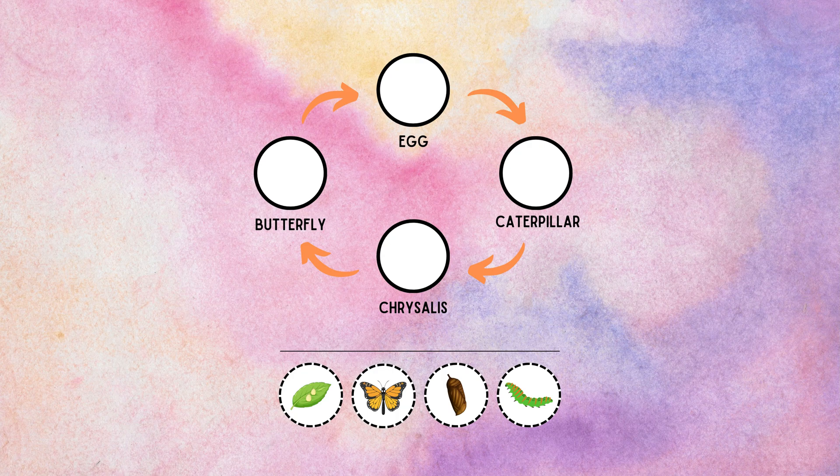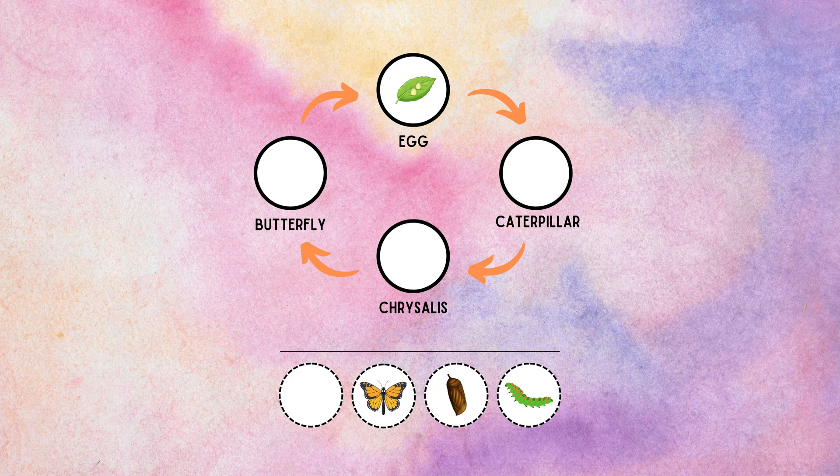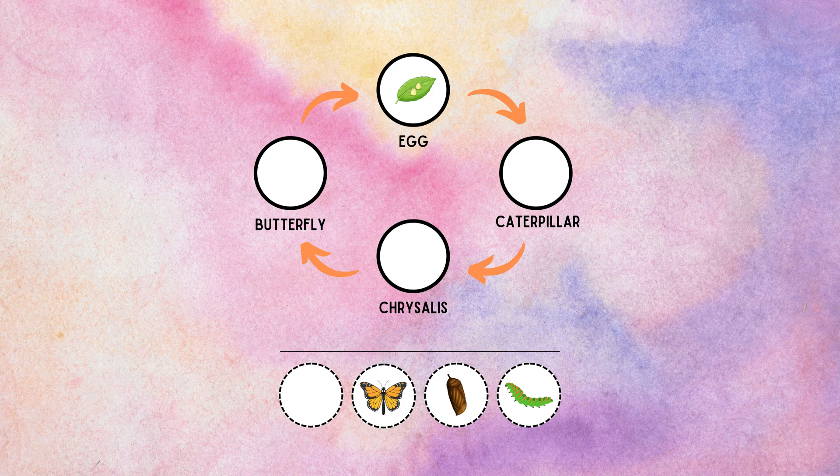The butterfly life cycle begins when a female butterfly lays eggs. Butterfly eggs are tiny and usually laid in clusters. The eggs may have different shapes and colors depending on the species. When the eggs hatch, they give rise to caterpillars.